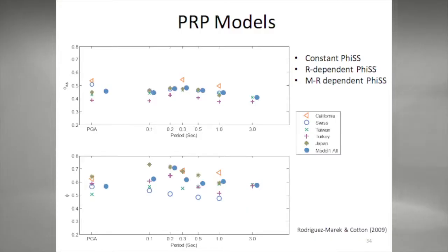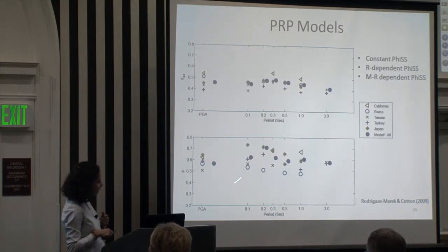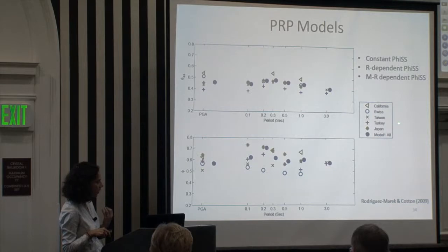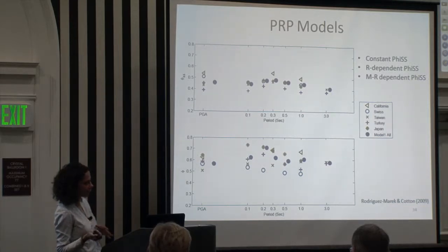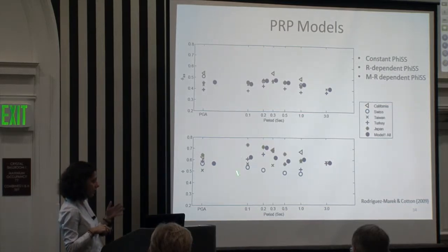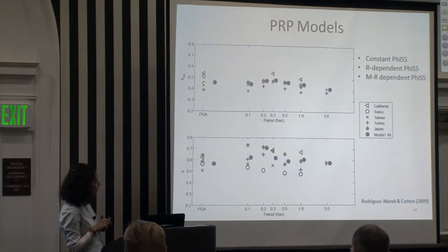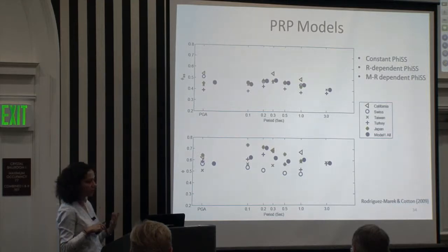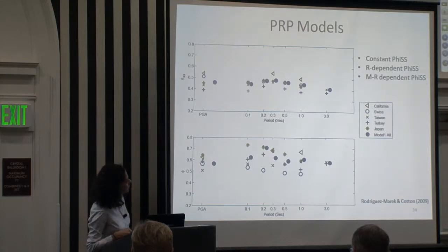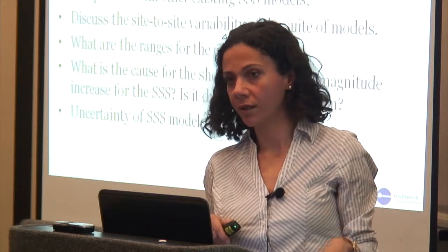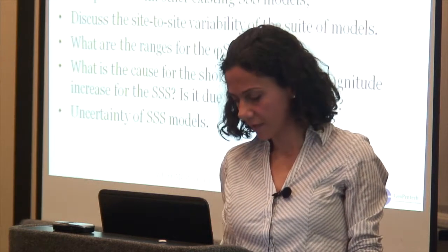Adrian gave a presentation at a previous workshop on phi SS models developed for the Pegasus refinement project. Their report shows phi — the ergodic within-event standard deviation — for different regions: California, Switzerland, Taiwan, Turkey, and Japan. They had significantly less data than NGA West 2. There is a regional dependence in phi, but when they removed the site term, things looked more stable. One conclusion at the time was that there isn't regional dependence, which is not what I see now with the Taiwanese data. They had three phi SS models: constant, distance-dependent only, and magnitude-and-distance dependent.